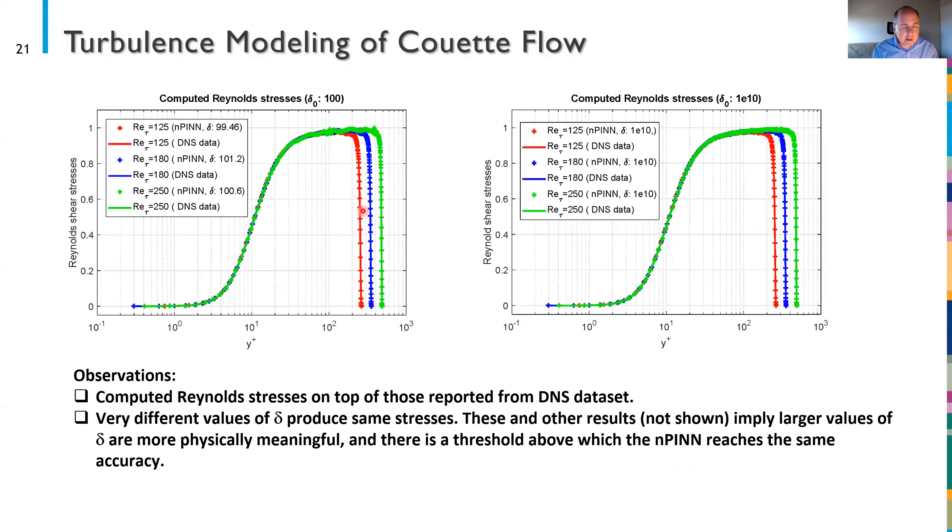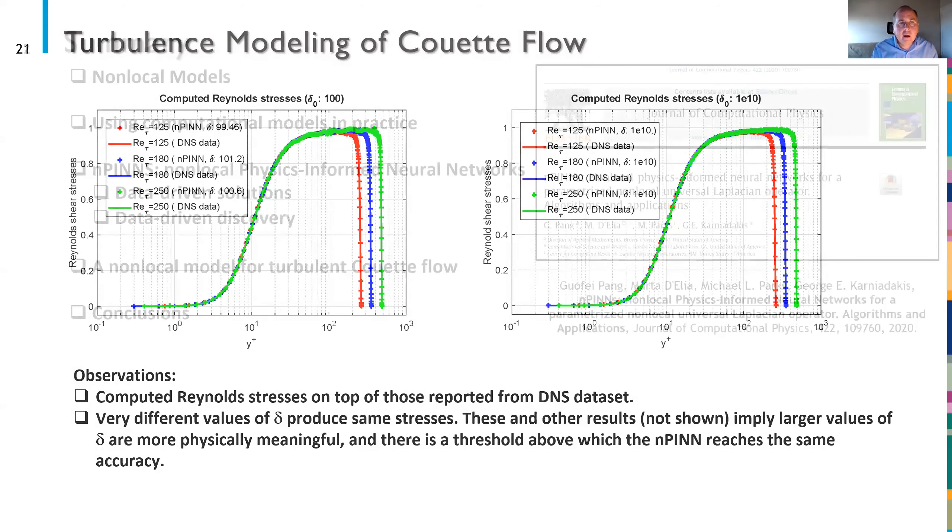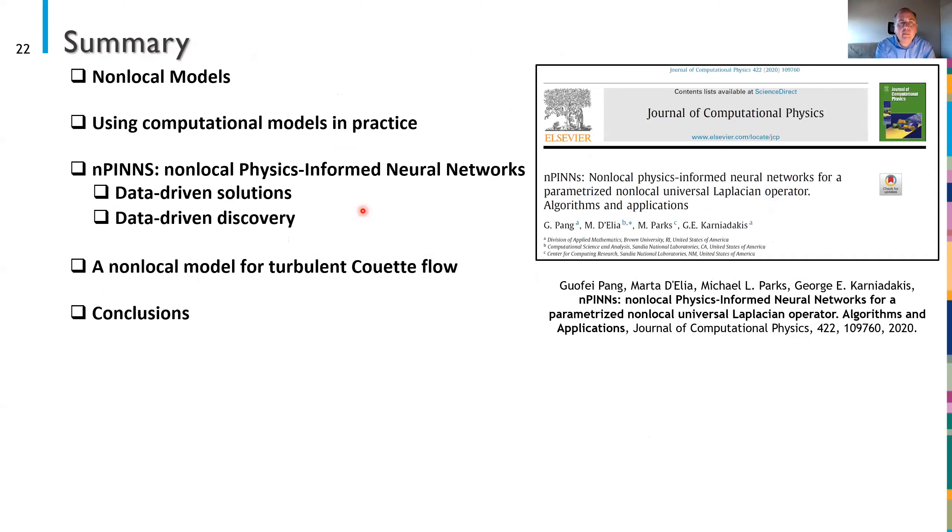I won't go into detail on this slide in the interest of time other than to say you can compute the Reynolds stresses pretty accurately from the nPINNs results and it in fact falls pretty much on top of the results given in the DNS data set. So with that I'll wrap up. I left out of course a lot of details but they're in a paper that appeared in JCP just last year. So thank you for your time and I'm happy to take any questions.